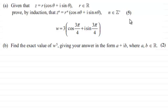And now we're being given that w equals 3 times cos of 3π over 4 plus i sine 3π over 4, and asked to find the exact value of w to the power 5, giving your answer in the form a plus ib, where a and b are any real numbers, for two marks.